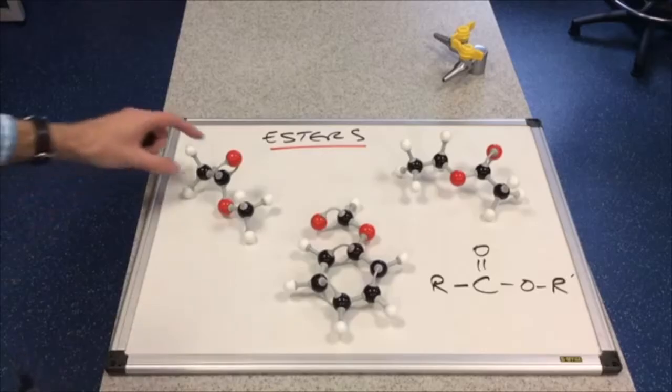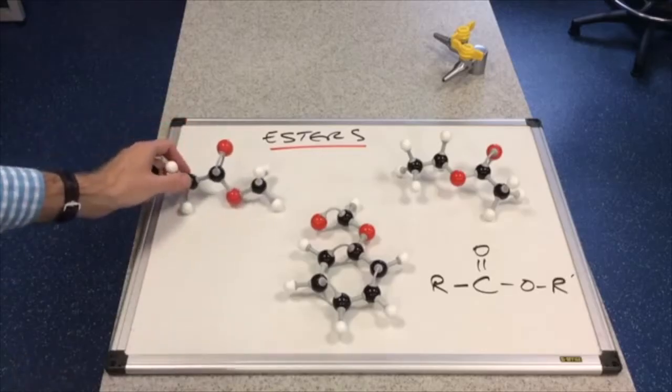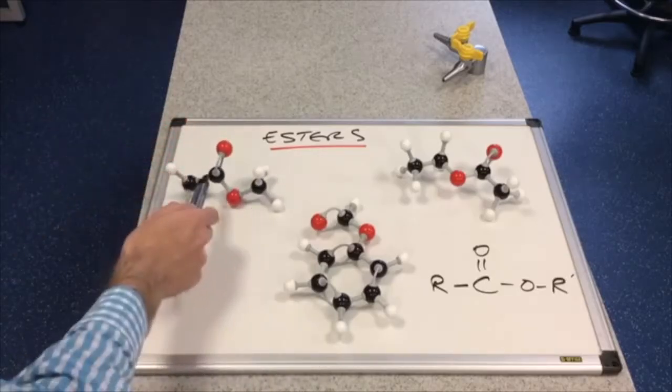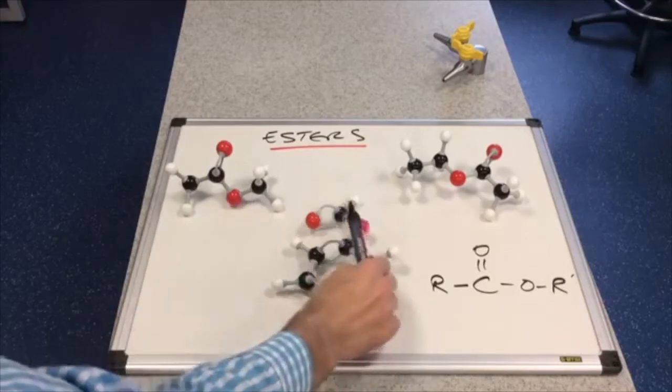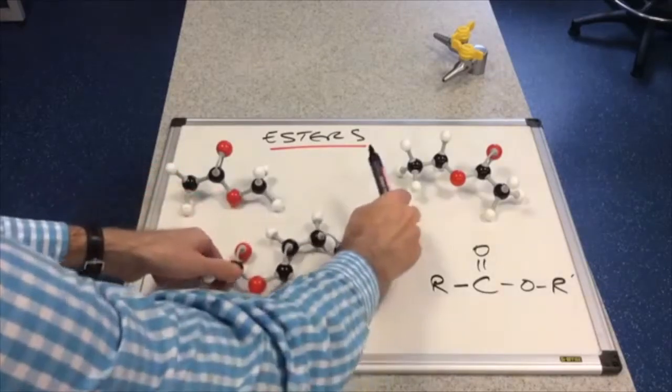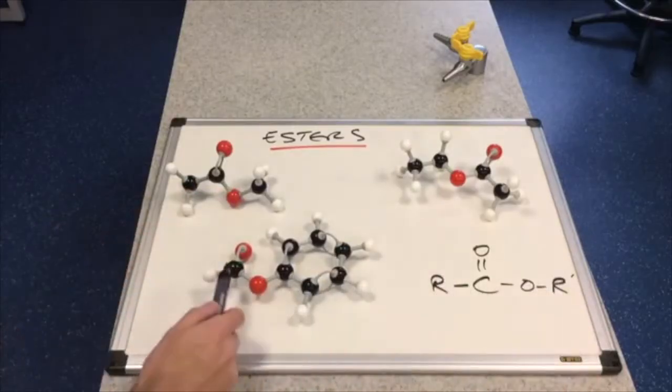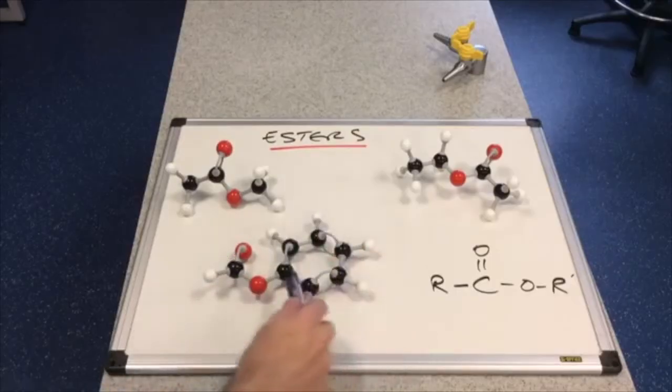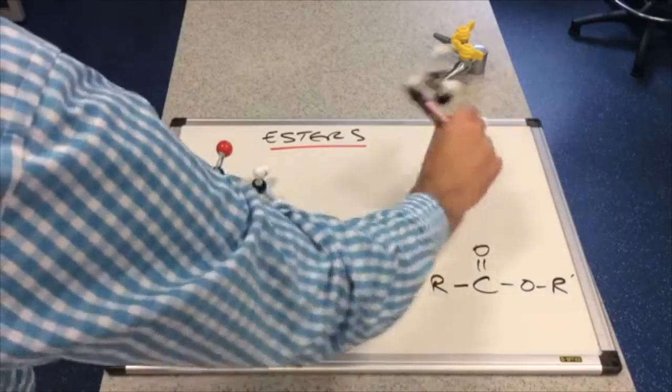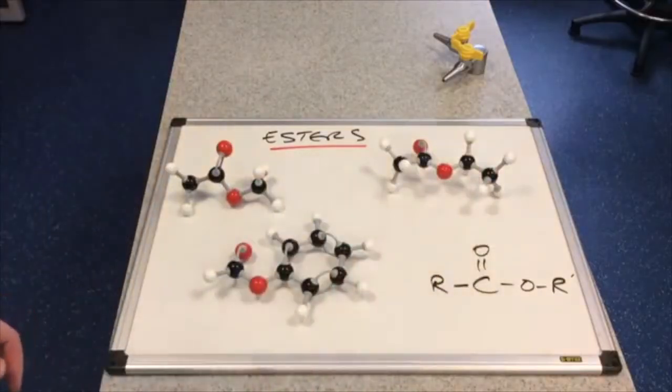So you can see in the three molecular model kits I've got on the board there, we've got the functional group: R group, C double bond O, single bond O, R group. We've got the same going on here. I'll just orientate it so it mirrors this. R group, C double bond O, single bond O, R group. And again, just turn it around, we've got the same going on there.